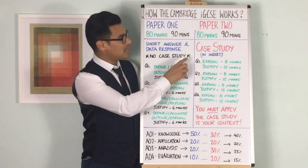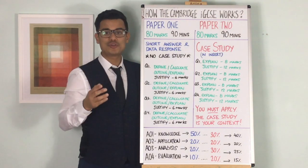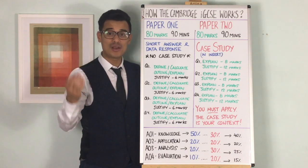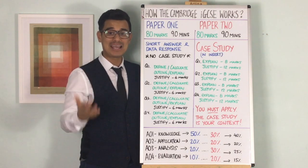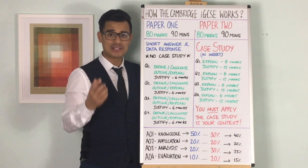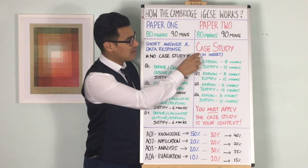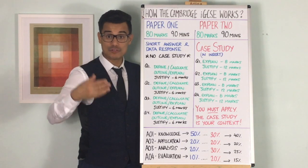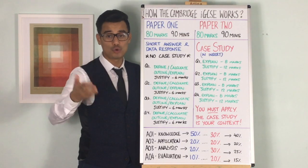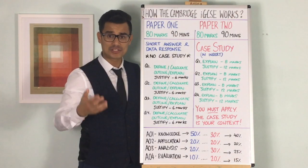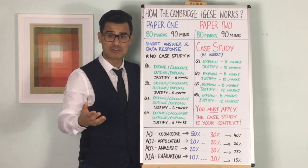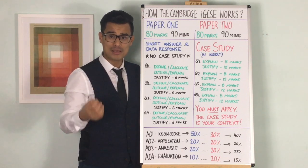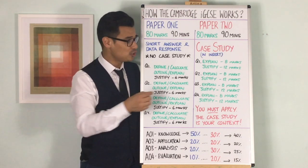In terms of Paper 2, it's the same amount of time and the same amount of marks — 90 minutes, 80 marks — but it's different because you're going to have an insert. That insert is effectively your context or your case studies, and you need to refer to that case study. It's very important. Bring a highlighter pen and make sure you are actively engaging with the case study.